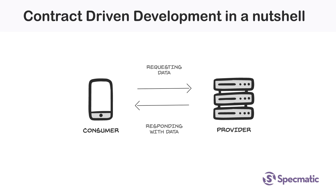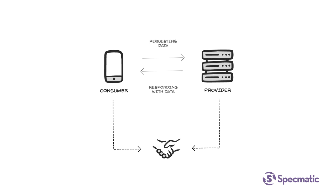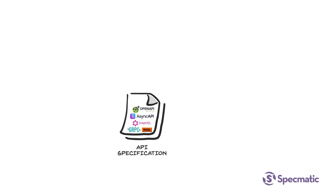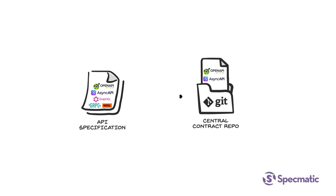Using an API-first approach, the consumer and provider will agree on the contract between them and capture that in an open API, async API, GraphQL, GRPC, or WSDL specification. All such specifications will be stored in a central Git repo — our single source of truth.